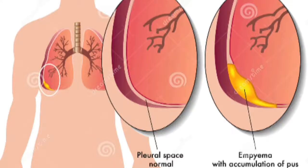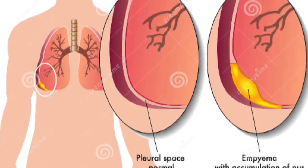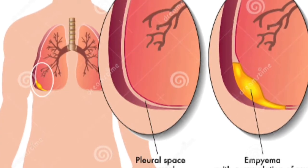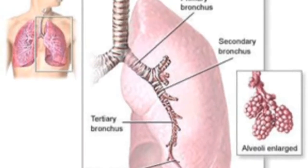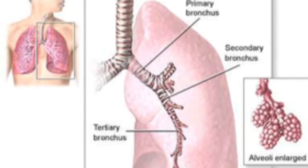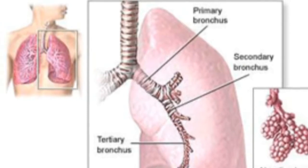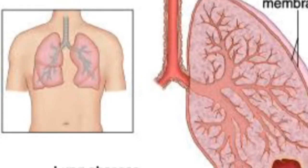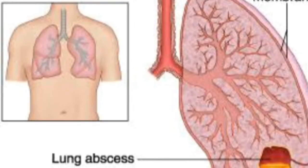Blood count shows polymorphonuclear leukocytosis. X-ray of the chest shows an abscess cavity with a fluid level. CT scan may be required to differentiate lung abscess from loculated empyema. Smear and culture of sputum or bronchial aspirate can identify the causative organism.